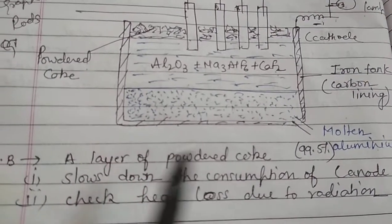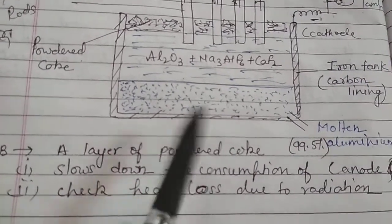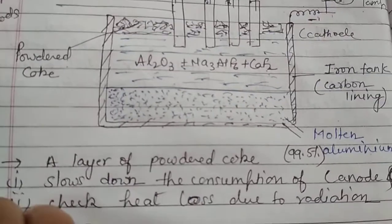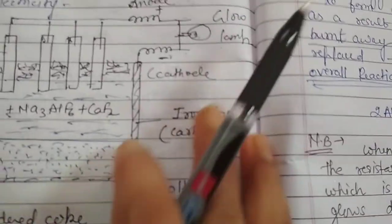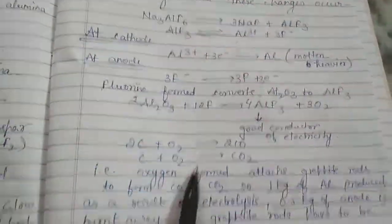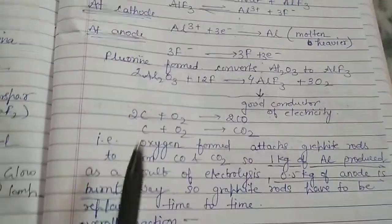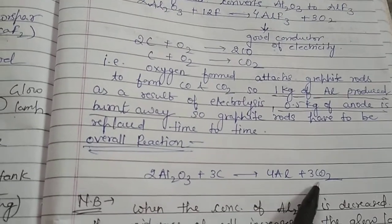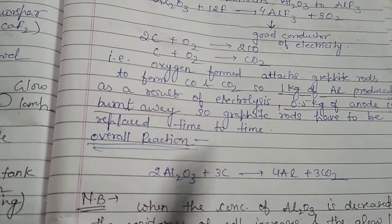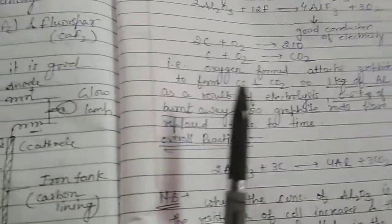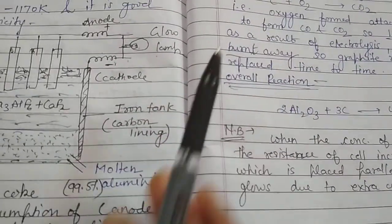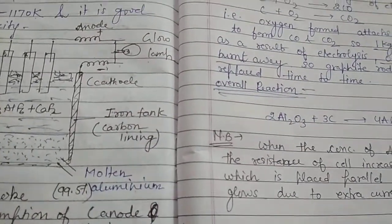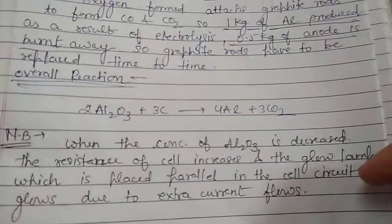The second reason is it checks heat loss due to radiation, because we need to maintain the temperature at 1173 K. So these two purposes are served by taking powdered coke as the uppermost layer. By the electrolysis process, the overall reaction taking place is alumina reacting with coke to give aluminium and carbon dioxide. By this process we are able to get 99.5% pure aluminium.